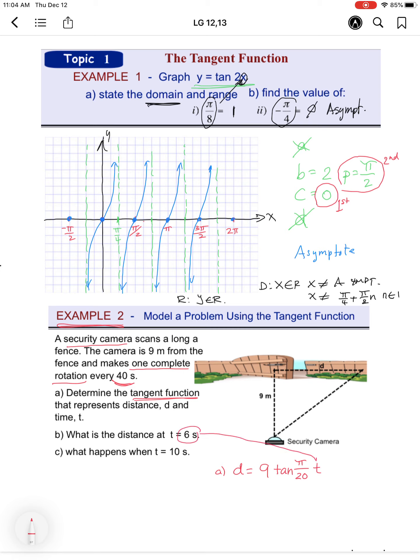What is the distance at t = 6? You plug 6 into the equation and get 12.39 meters. For part c, when you put t = 10 in, you get undefined because it's an asymptote.